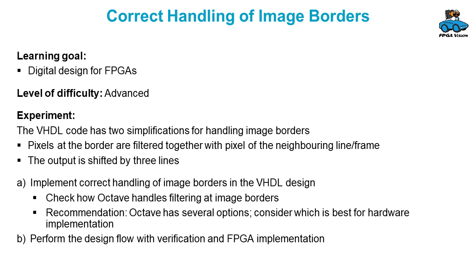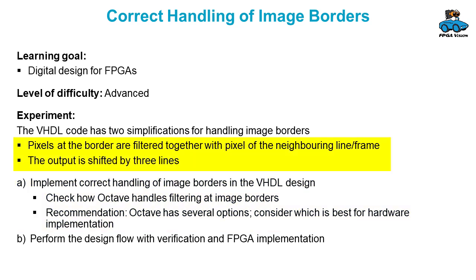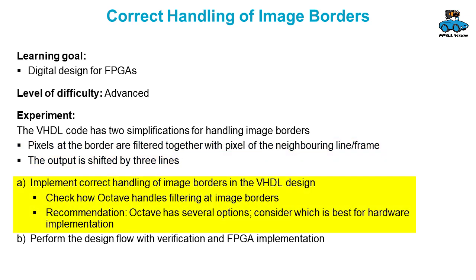The design that is provided uses simplification at the image borders. An advanced experiment is to modify the code for correct handling of these image borders — do not filter the borders together with pixels of the neighboring line and frames, and correct the shift of three lines. You can check how Octave handles the filtering at the image borders, as there are different options. My advice is that you check which option is the best for hardware implementation and then implement that.